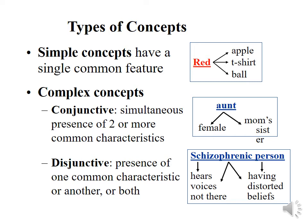A conjunctive concept requires multiple conditions to all be met. To be someone's aunt, you have to be (1) female and (2) the sister or sister-in-law of someone who had a child. Both must be met for you to be anyone's aunt. If either condition is not met, you cannot be an aunt.